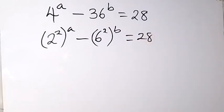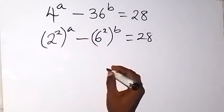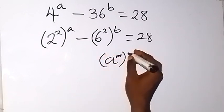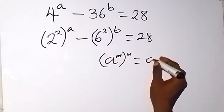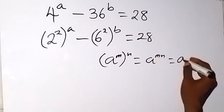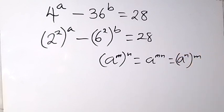From here, when we apply the laws of indices, we can interchange what we have. Because when we have a raised to power m, raised to power n, this will be equal to a raised to power m, which can also be written as a raised to power n multiplied by m. So we can switch what we have there.